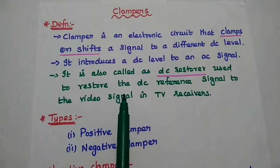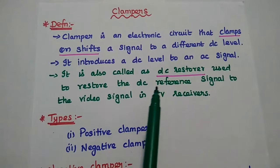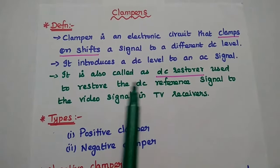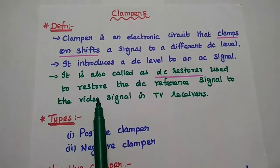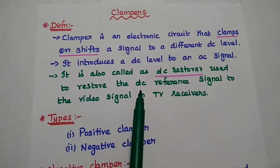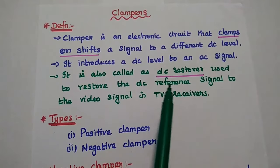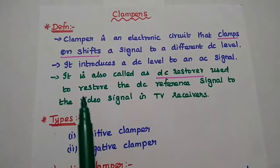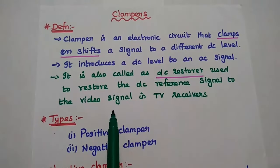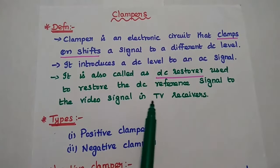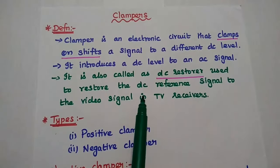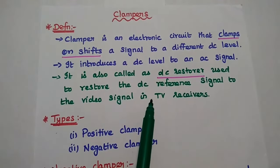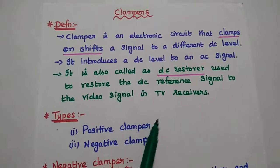It is also called a DC restorer, which is mainly used to restore the DC reference line to the video signal in TV receivers. So the clamper is also called a DC restorer.